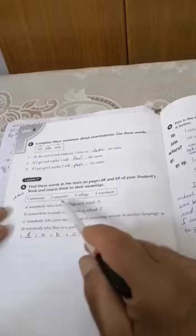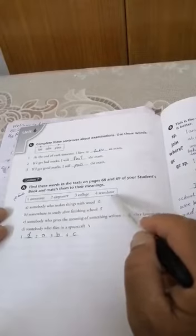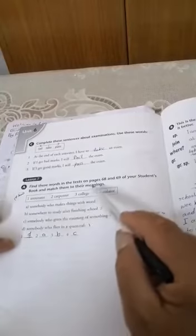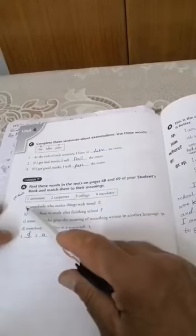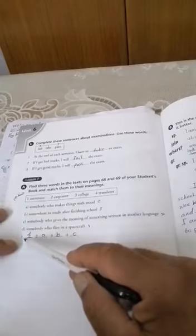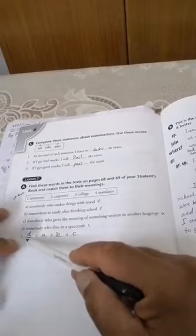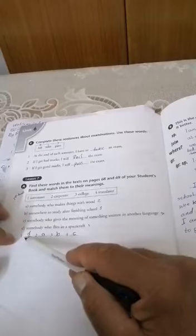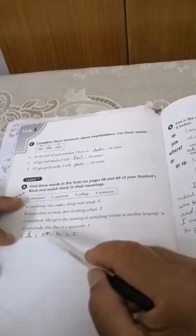And here in lesson 7a, also they are important. We have one astronaut, carpenter, college, translator, and we have definitions and we have to choose the letter and put it in front of the number. Number one, D. Somebody, astronaut, somebody who flies in a spacecraft.